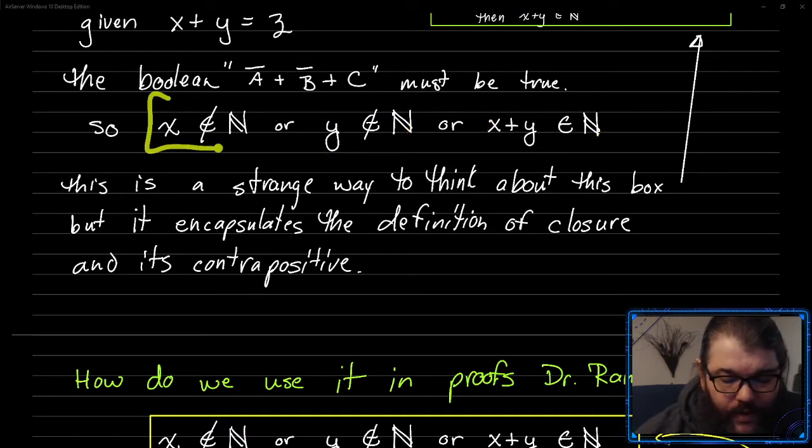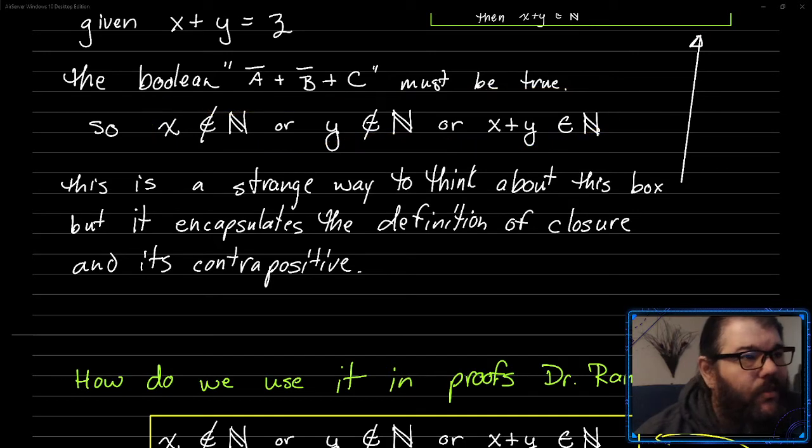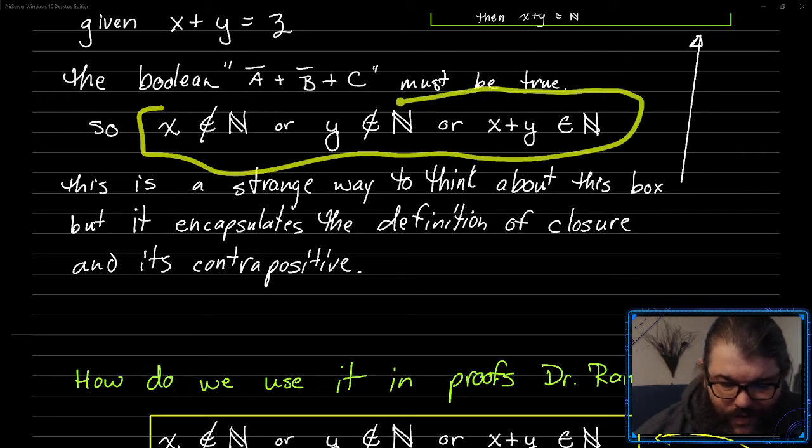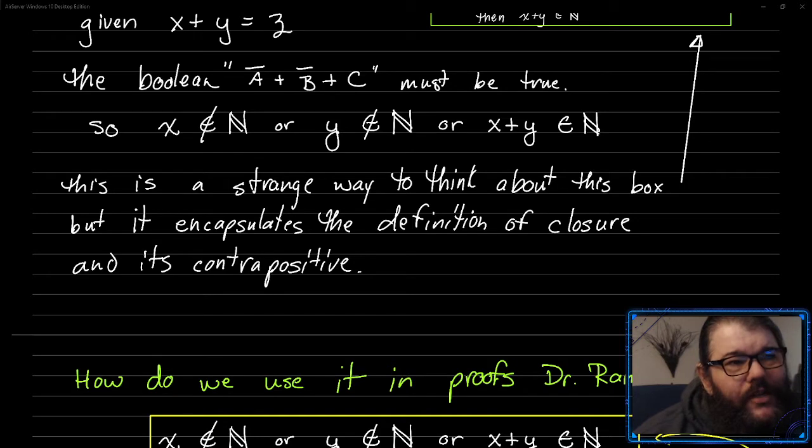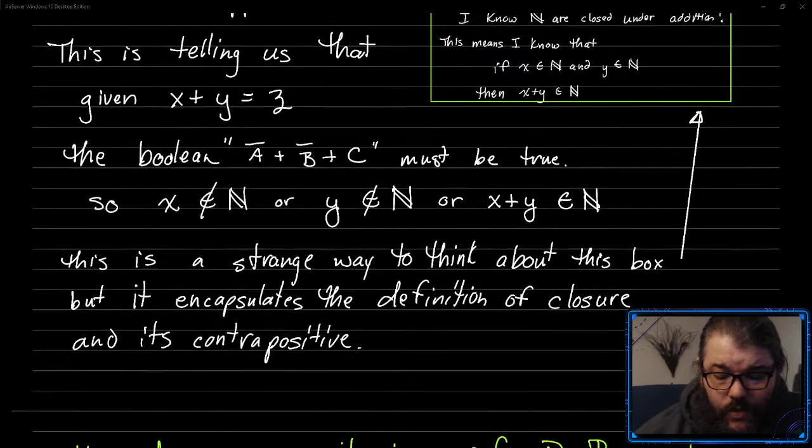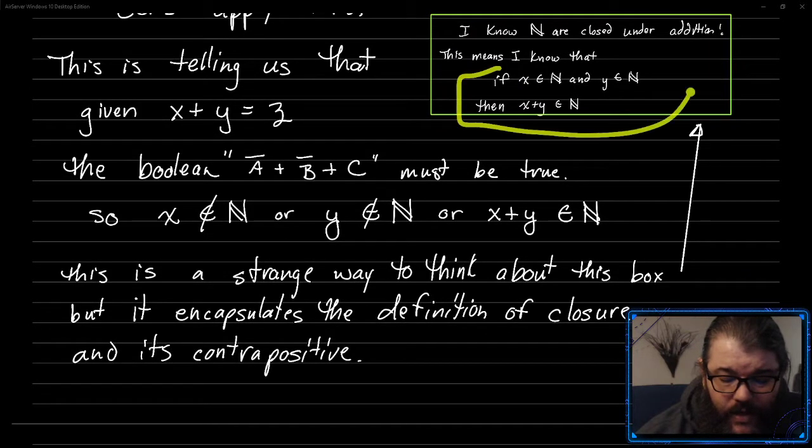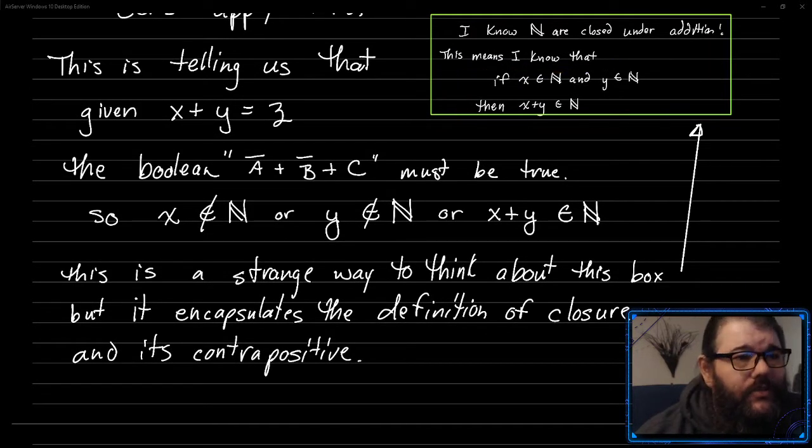So when we take that implication, we break it out and we apply all these logical rules, then not a or not b or c for this implication gives us this interesting statement here, which is pretty cool. It's a strange way to think about the implication perhaps, and sometimes the contrapositive can help you think about some of your solutions a little bit better, but it's the same definition as closure. It is this implication and we can prove that logically, which is super cool.